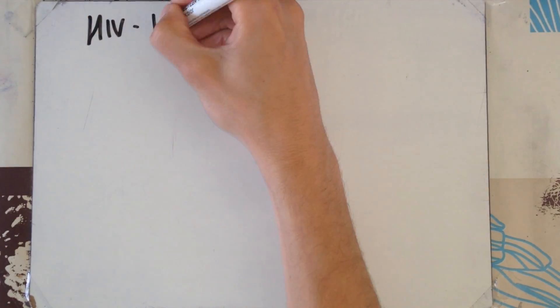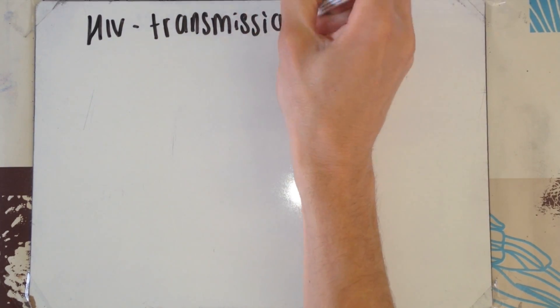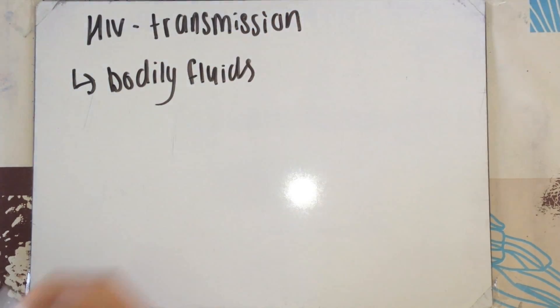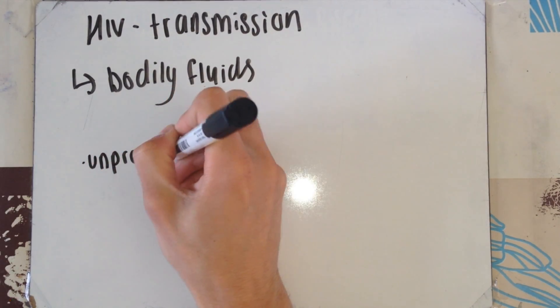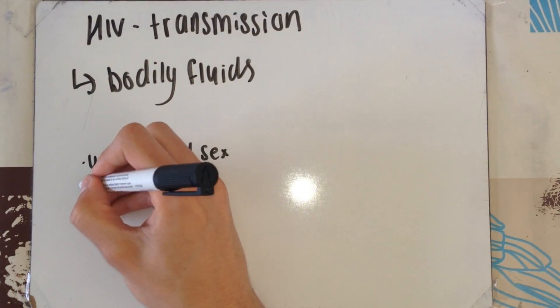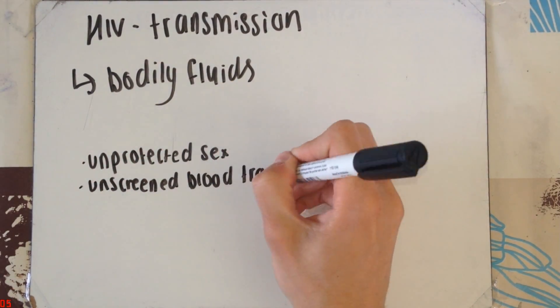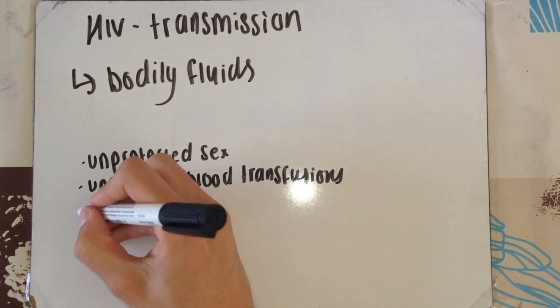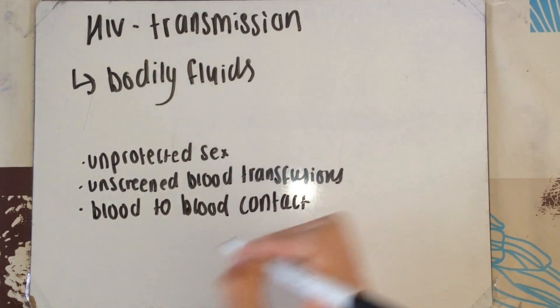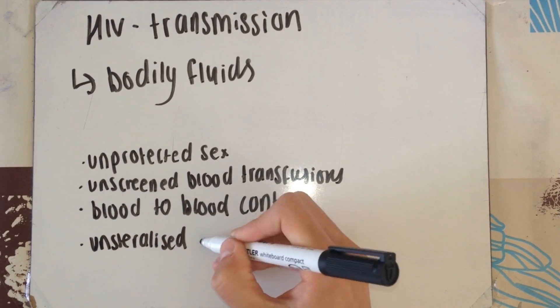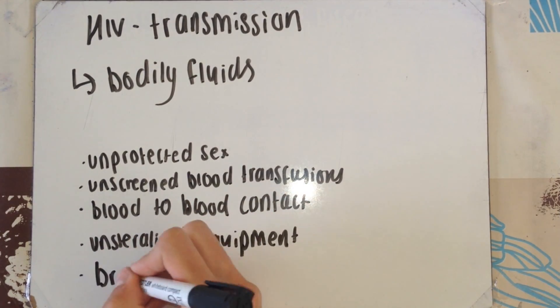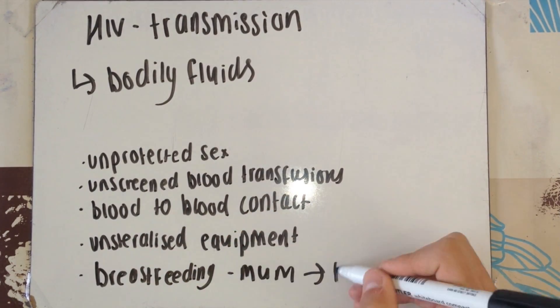Now, how does HIV transmit from one individual to another? HIV is only transmitted through bodily fluids. This includes, but is not limited to, unprotected sex, unscreened blood transfusions, blood-to-blood contact such as shared needles or needle-stick incidents, using unsterilized equipment, or breastfeeding. This goes from mother to child.